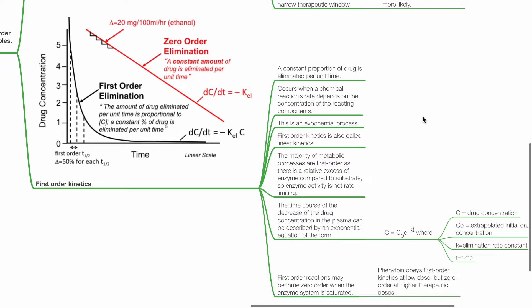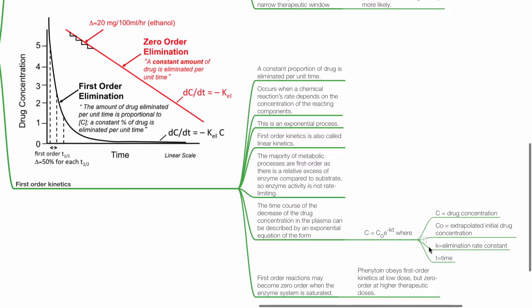The time course of the decrease of drug concentration in plasma can be described by an exponential equation in the form: C = C₀ × e^(−KT), where C is drug concentration, C₀ is extrapolated initial drug concentration, K is the elimination rate constant, and T is time.